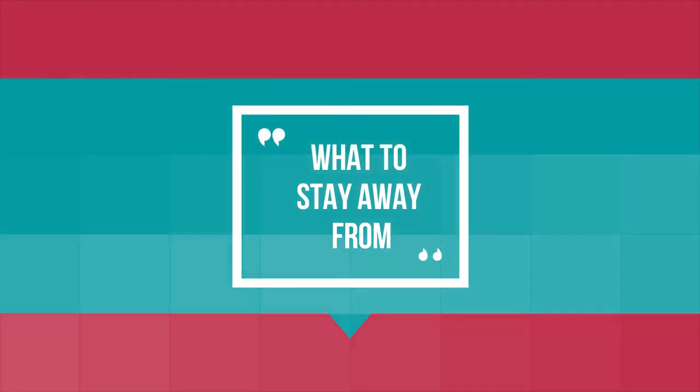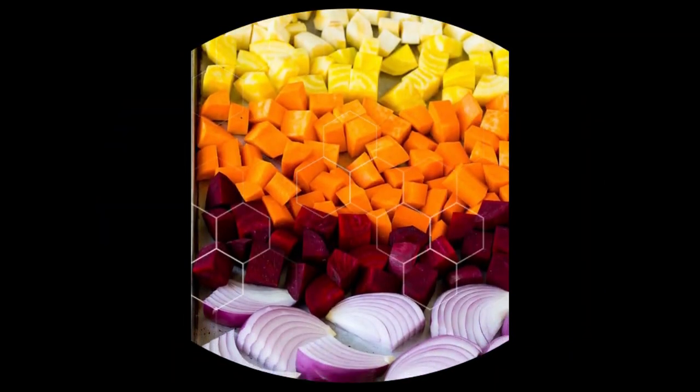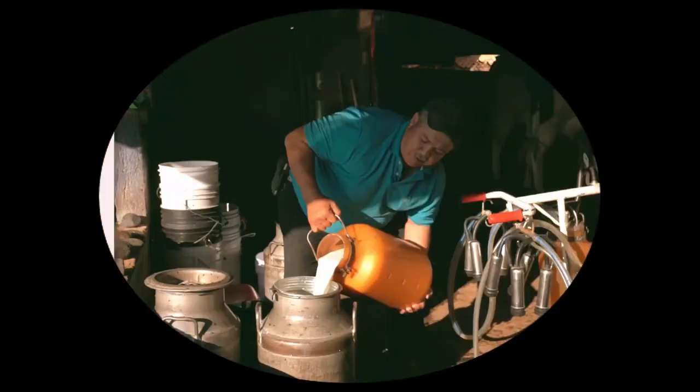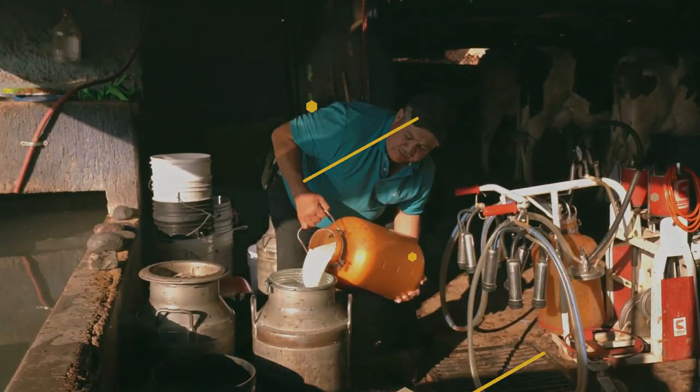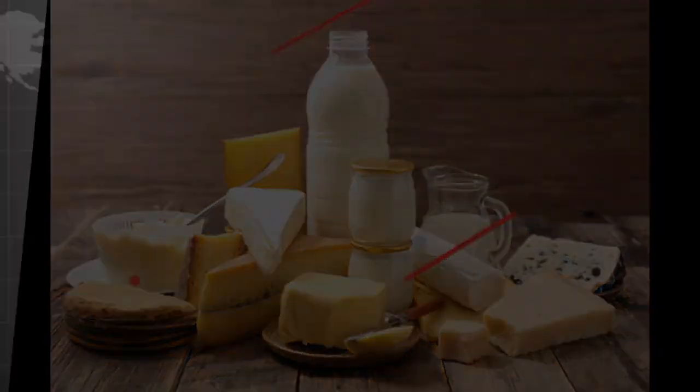What to stay away from: potatoes, parsnips, beets, and sweet corn are examples of starchy root vegetables. Dairy products with low fat. Some dairy products, such as milk, yogurt, or cheese, have a high lactose or protein content.